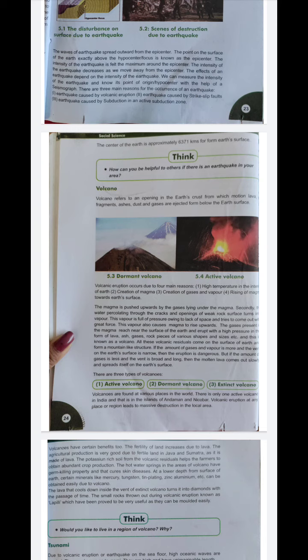There are dormant volcanoes and active volcanoes — which you can see here. Volcano eruptions occur due to four main reasons: high temperature in the interior of the earth, which leads to creation of magma, creation of gases and vapour, and the rising of magma towards the earth's surface. The magma is pushed upward by the gases lying under it.